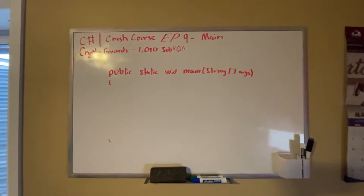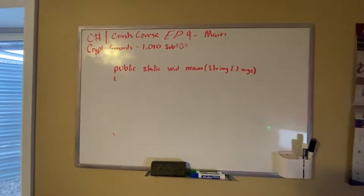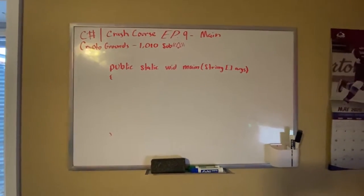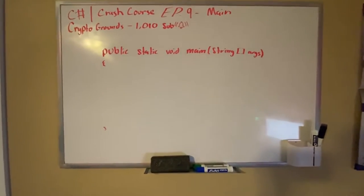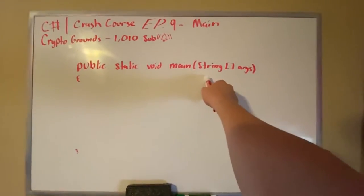Hello guys, Crypto Grounds here. Welcome back to another C# crash course video. This is episode 9, and today we'll be discussing the main method. So I'm going to be talking about why we use this and what even is this string array args.